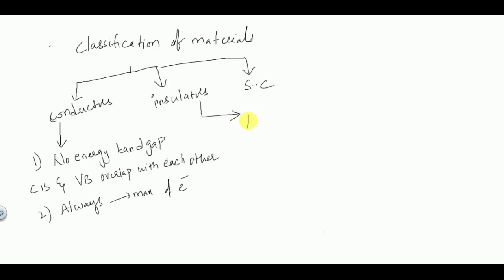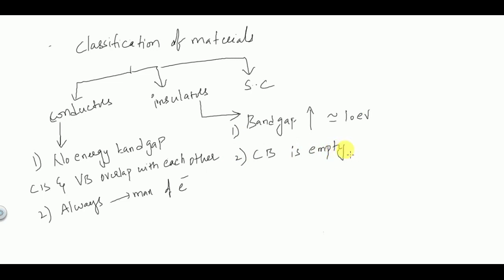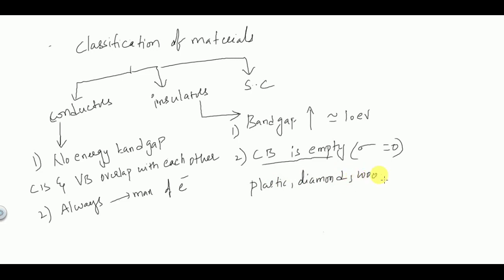Insulators have a band gap which is very large, in the order of 10 electron volts. In insulators, the conduction band is empty, so no free electron will be available, and hence the conductivity is equal to zero. Examples of insulators are plastic, diamond, and wood. All metals are very good conductors of electricity, so they come under the classification of conductors.